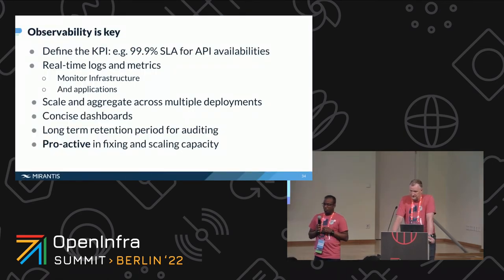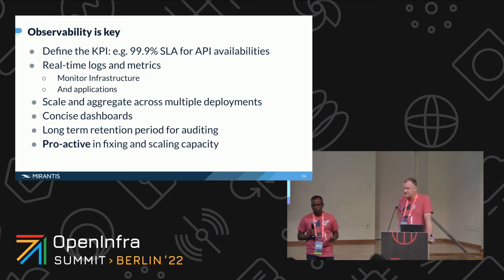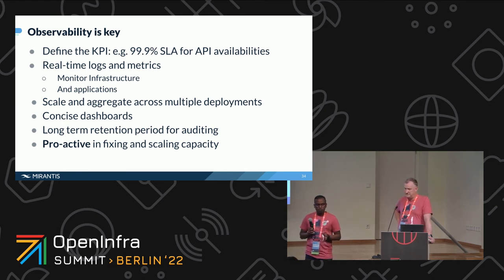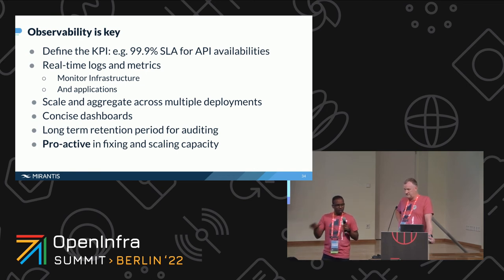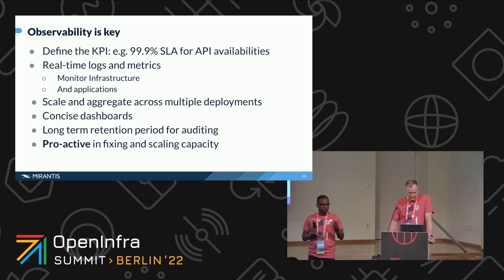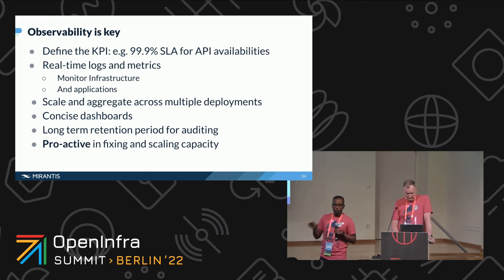And then rapidly, on operational excellence — I'm going to focus on observability here; we could spend the whole 30 minutes on this. The first thing is to define the KPIs: define how you are measuring the availability of your platform, for example, 99.9% SLA on API availabilities. Have also the ability to do real-time logs and metrics to monitor the infrastructure but also the applications. And then as you scale out, because you have multiple sites — you want to be geo-redundant, you want to have a disaster recovery site — you want to be able to aggregate all these logs and metrics, consume them to build concise dashboards, have long-term retention periods to be able to audit, and most importantly, for your support organization, proactively be able to fix issues and do forecasting. Thank you very much for your attention.